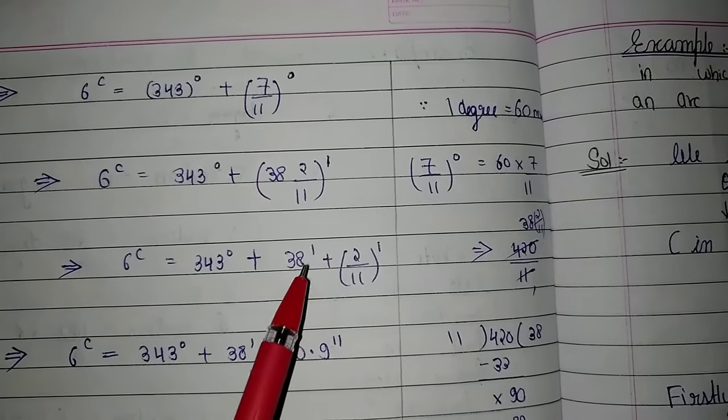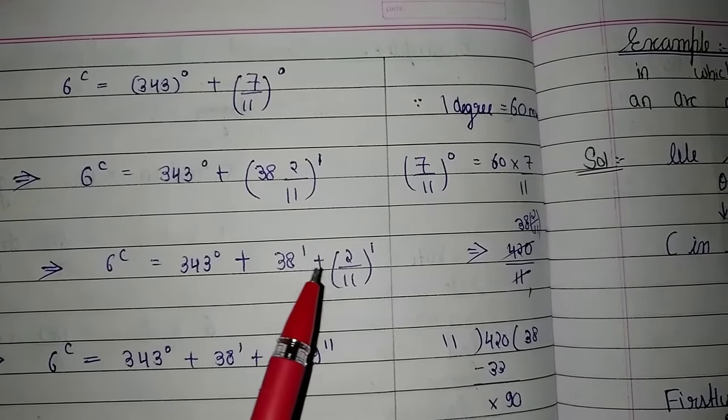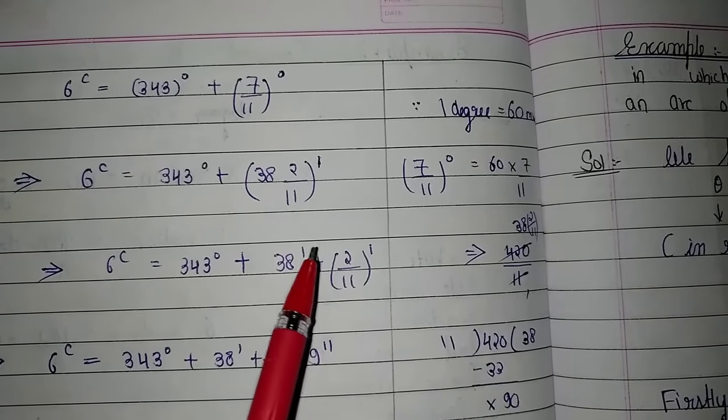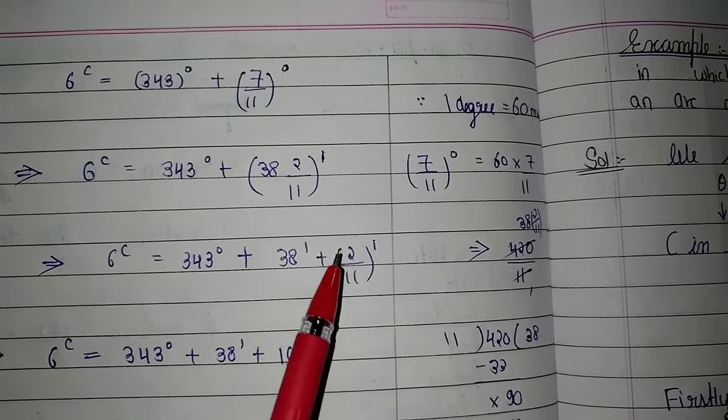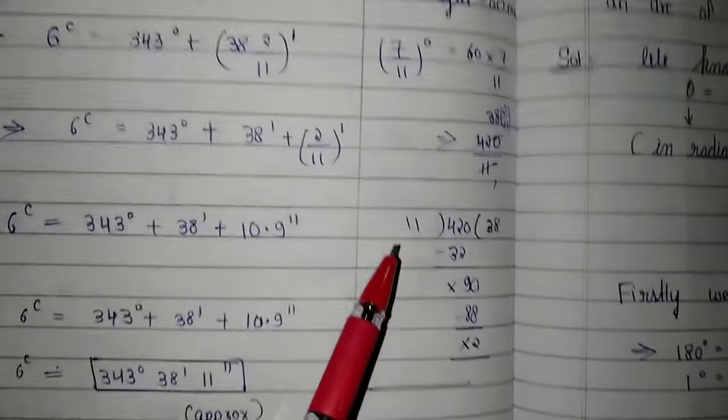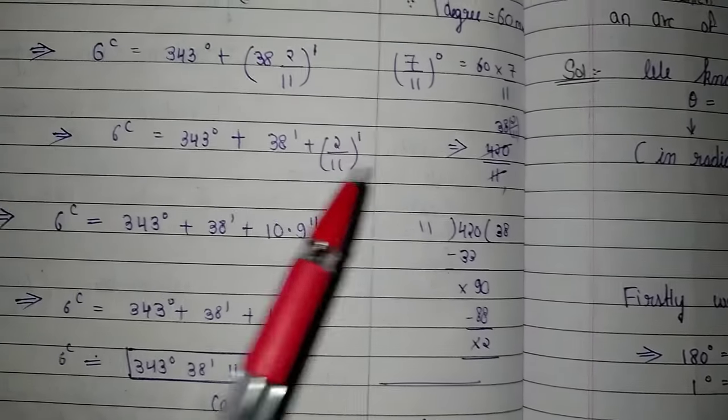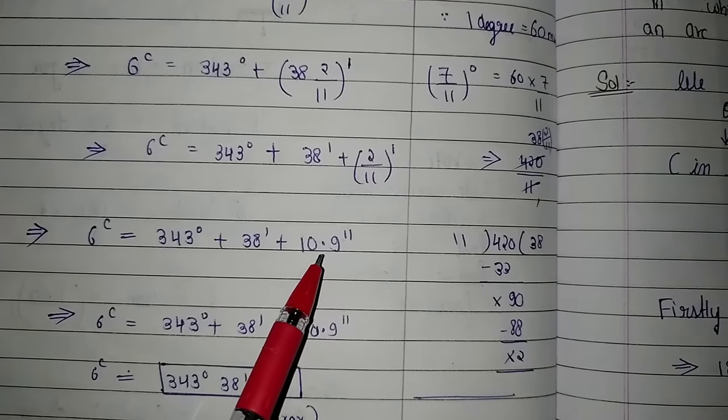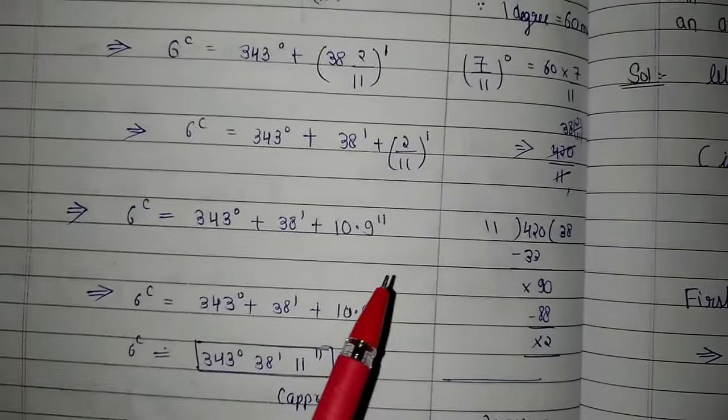Now we write it separately and change the fractional part into seconds. We use 1 minute equals 60 seconds. After we calculate, the answer is 120 upon 11 seconds, which equals approximately 10.9 seconds.